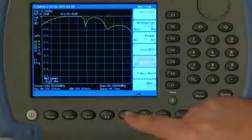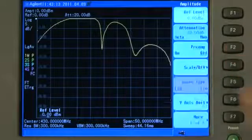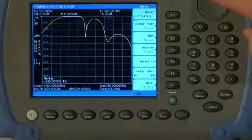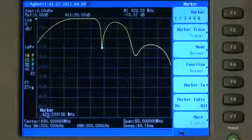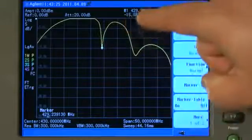I will just press the Amplitude button and select a scale per division of say 5 dB per division. And if I put a marker on the trace and turn the knob, you can see we have a good return loss there in the notch of the filter of about minus 15.5 dB.